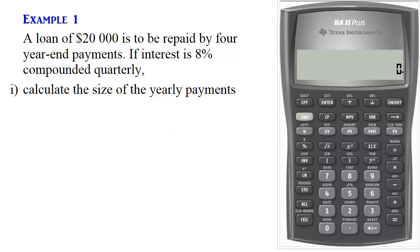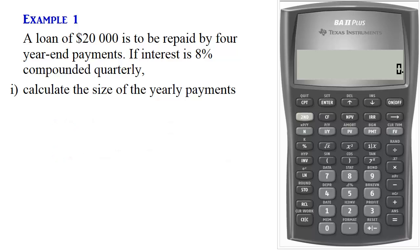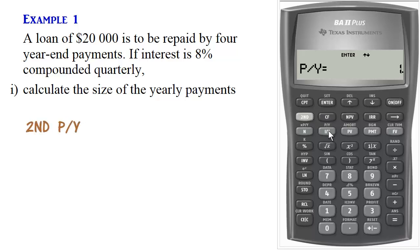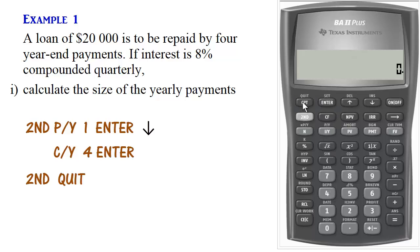We begin by setting our P/Y and C/Y. Payments are made annually, so we will set payments per year to one, and we will set compounding frequency to four since interest is compounded quarterly. We press 2nd P/Y, set P/Y to one and press Enter, scroll down, set C/Y to four and press Enter, then 2nd Quit.